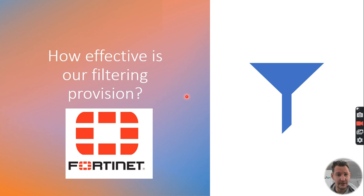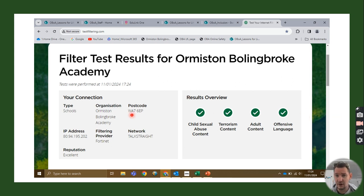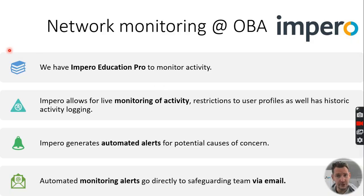The filtering provision at Olmiston Bollingbroke Academy uses a company called Fortinet — that's the software installed to filter inappropriate content. As a parent or carer, you may wonder whether it's effective. I've done testing of our filtering system, and as you can see on screen, our filtering provider Fortinet is performing effectively across the different categories of content that need to be filtered.